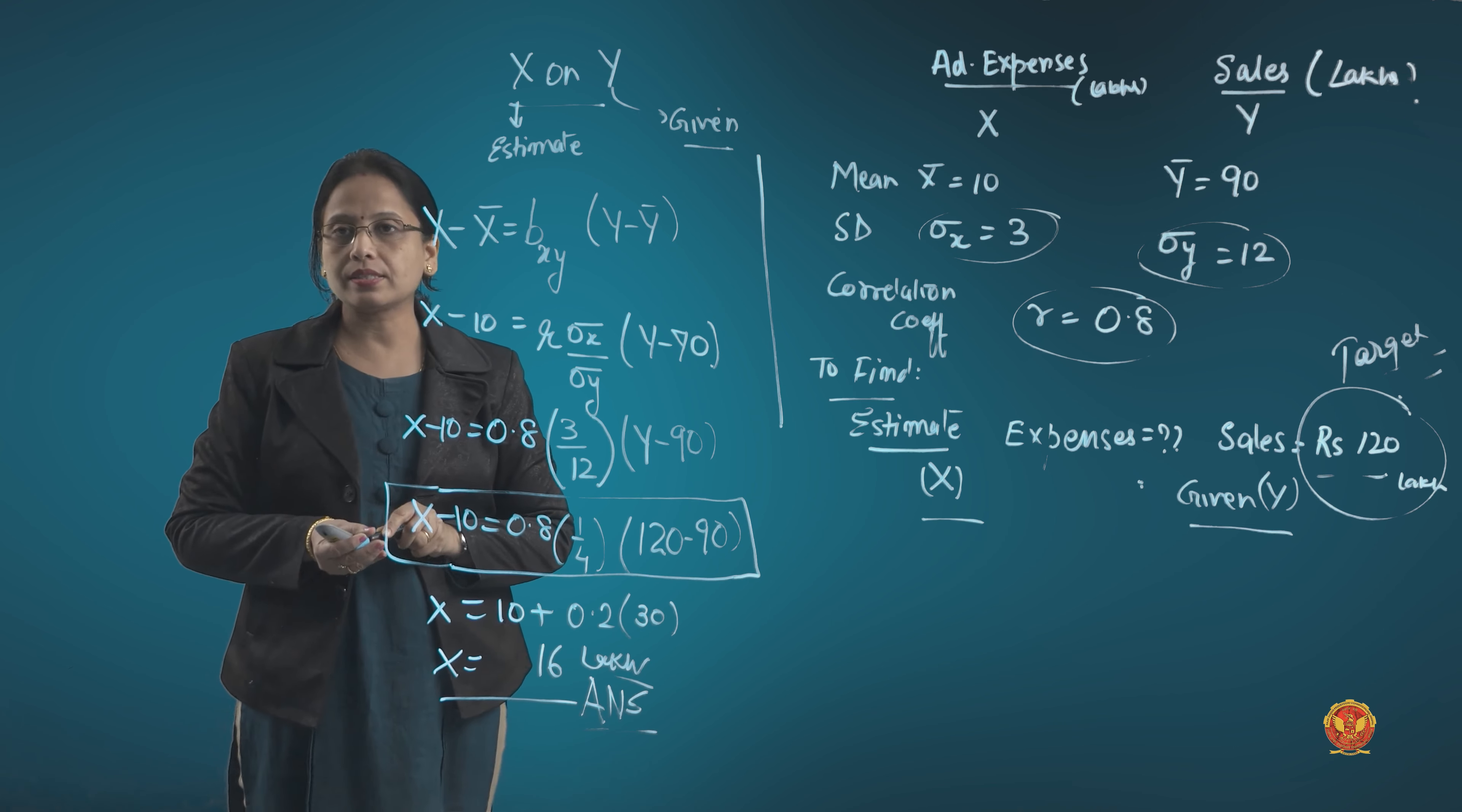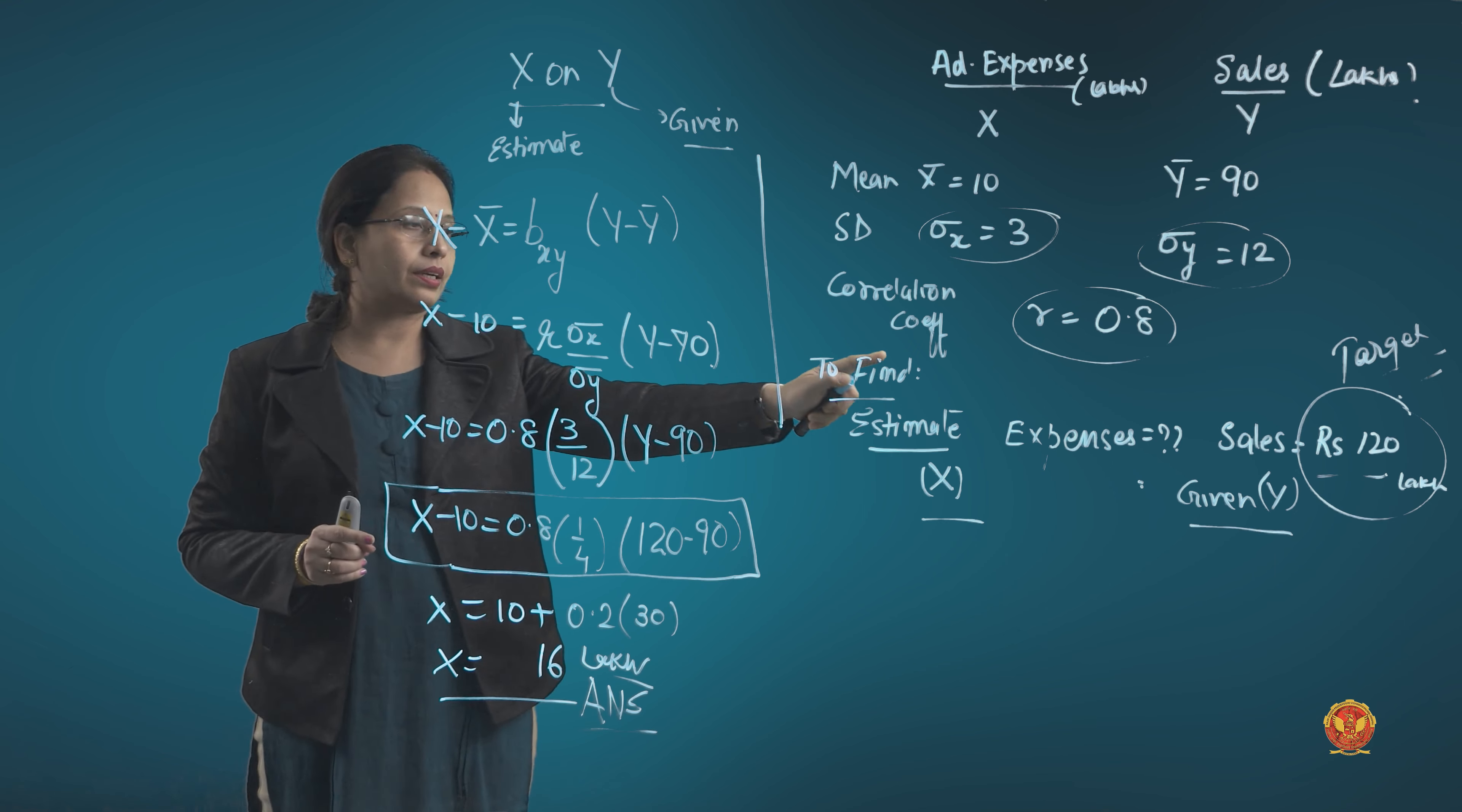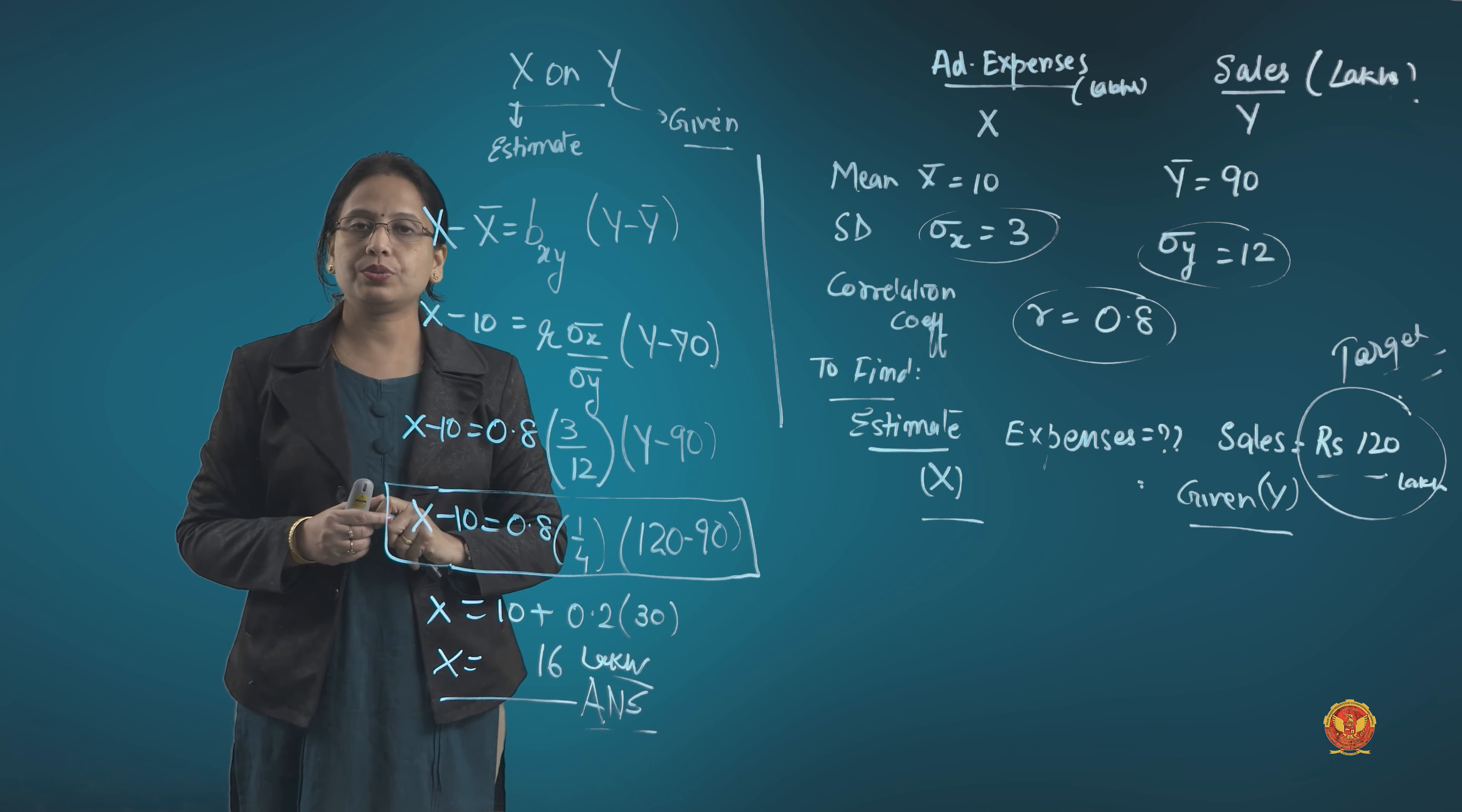What is the answer? The advertising budget for this company should be 16 lakhs if the sales target of 120 lakhs has to be achieved. So this is the way we use to answer such questions using regression.